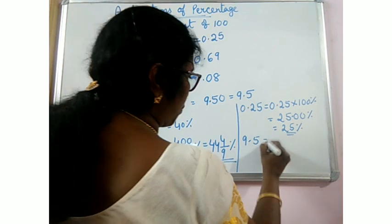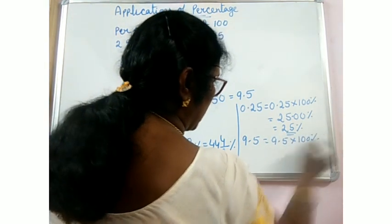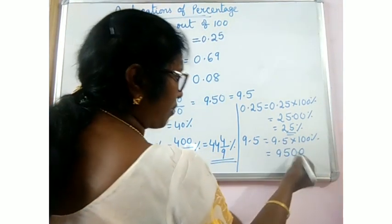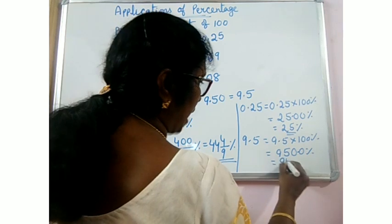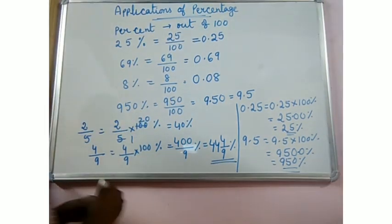The given decimal is 9.5, convert to percentage into 100%. 95 into 100 is 9500, after one place decimal. That means 950 percentage. We got it.